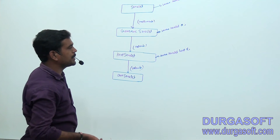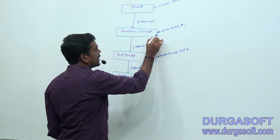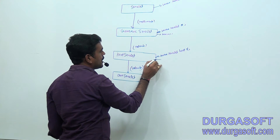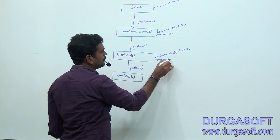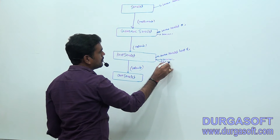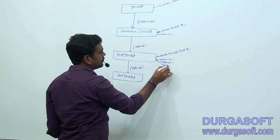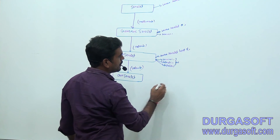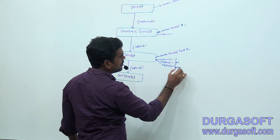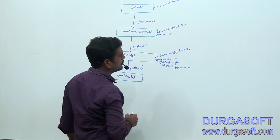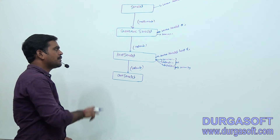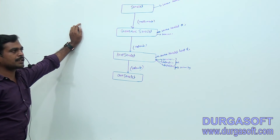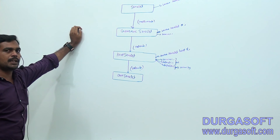Whenever we are implementing business logic using Generic Servlet, we can override the service() method. Whenever we are using HTTP Servlet, we can override either the service() method, or we can use the doGet() method, or we can use the doPost() method. Whenever we are in doGet() or service() method, it is not possible to provide security. Whereas whenever we are using the doPost() method, we can provide security. This is what makes HTTP Servlet a protocol-dependent Servlet — it is supported by HTTP requests only.